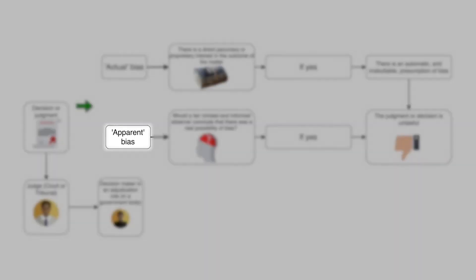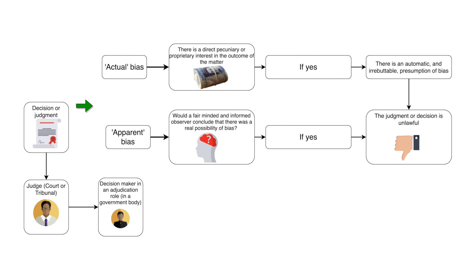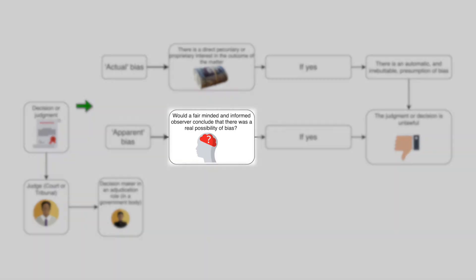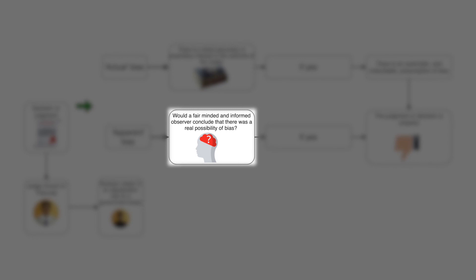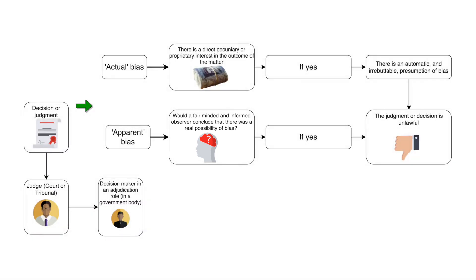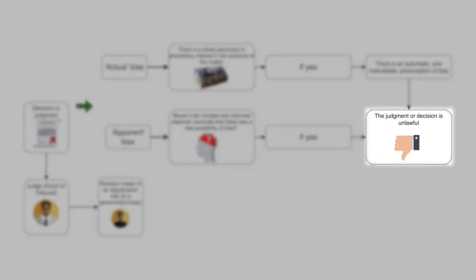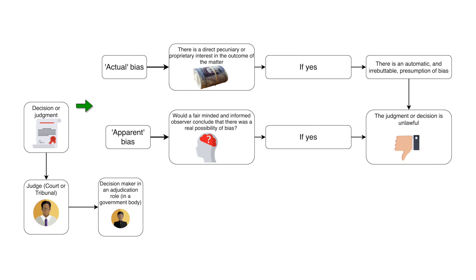Or you have apparent bias — this is where the legal test comes in that you need to learn for the SQE. Whether or not there is actual bias, which will rarely be admitted after the fact, the court will always ask in all cases: would a fair-minded and informed observer conclude that there was a real possibility of bias? If yes, then the judgment or decision is unlawful. This is the correct legal test to apply in all cases where bias is raised.